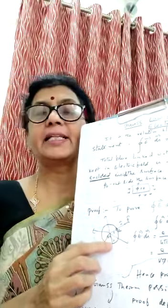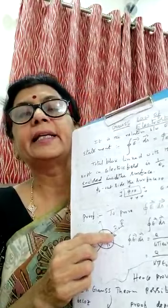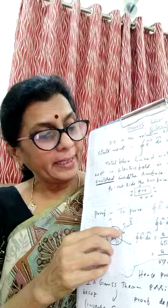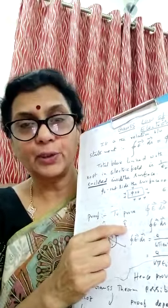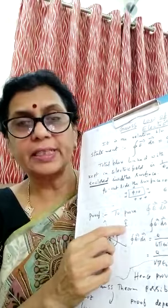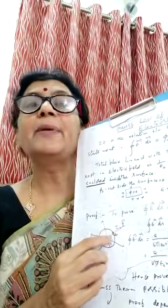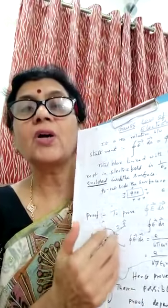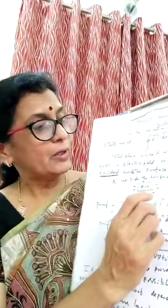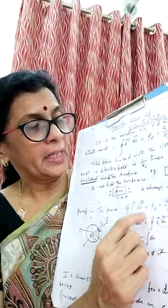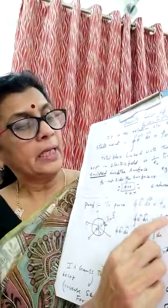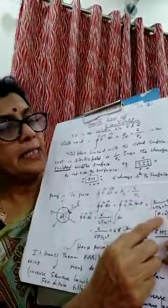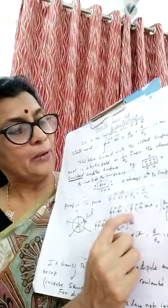Let us take the radius of the sphere as R. Consider a small area ds on the surface. The normal to ds and the electric field are in the same direction. So the angle θ between the electric field and the normal drawn to the surface is 0, and cos 0° = 1. Taking the left-hand side of Gauss law: ∮ E · ds = ∮ E ds cos θ = ∮ E ds. Since E is constant (Gauss law applies for uniform electric field), E comes outside the integral.